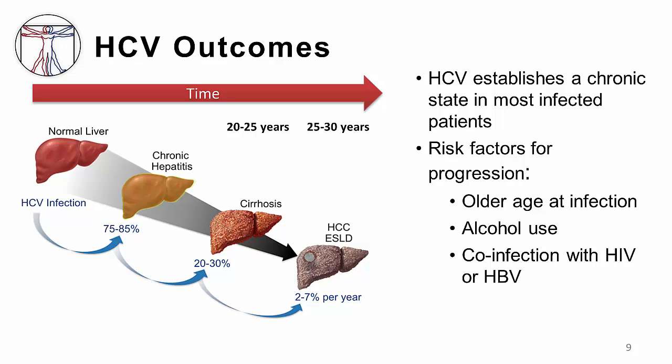Unlike hepatitis B infection, in which most newly infected adults are able to clear the virus, hepatitis C infection establishes a chronic state in the majority of patients — close to 80% or more of those infected. Around a quarter of those patients will go on to develop liver fibrosis and eventual cirrhosis over 20 to 30 years. A smaller percentage will unfortunately go on to develop hepatocellular carcinoma and end-stage liver disease. Whenever patients contract hepatitis C at an older age, have heavy alcohol use, or have co-infection with HIV or hepatitis B, the rates of progression to end-stage liver disease are higher.